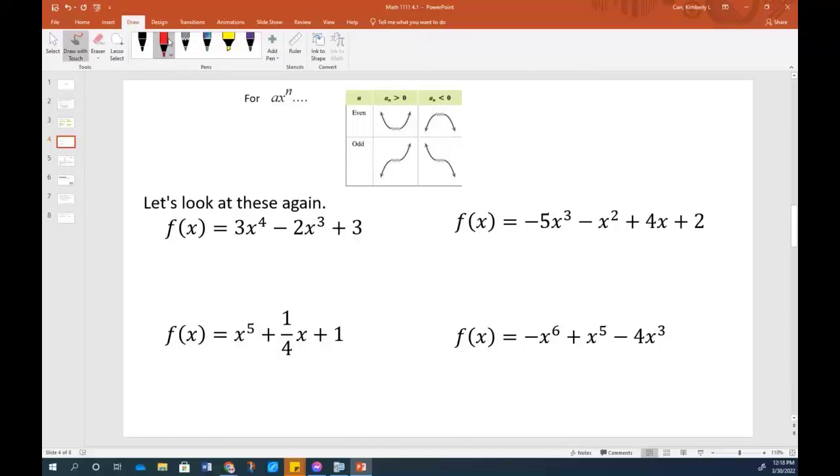When we look at this, then we just look at this leading term. And what I see is that this is a positive number and it's even. Since it's positive, I know that right-hand is headed up. And since it's even, I know that the other side is headed the same direction. I don't know anything about what's in the middle. Moving to the right then, I have a negative and I have an odd. Negative means the right-hand is headed down. And odd means the other side is going the opposite direction. Again, I don't know what's in the middle.